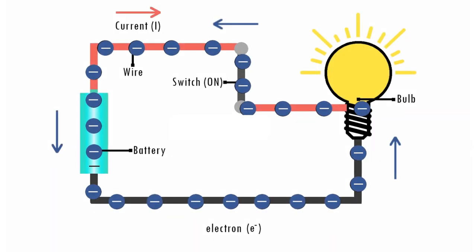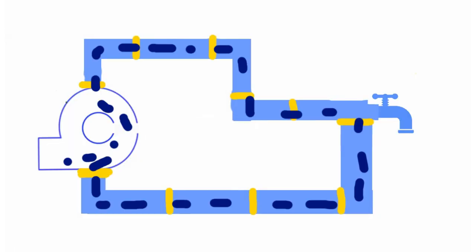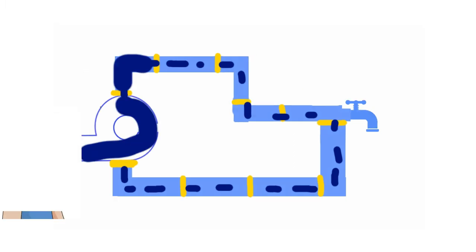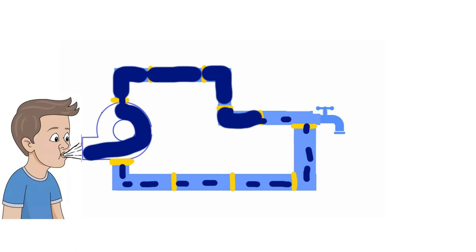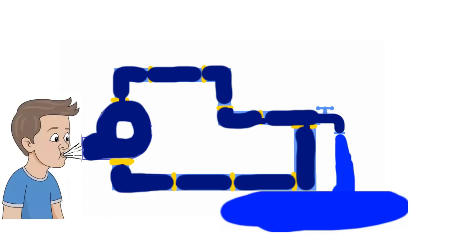For a better understanding we can imagine the wires of the circuit being some pipes. There is water in the pipes but there is no pressure. Therefore the water runs slowly or not even at all. If someone starts to blow in the pipe with some pressure the water will start flowing into the circuit.